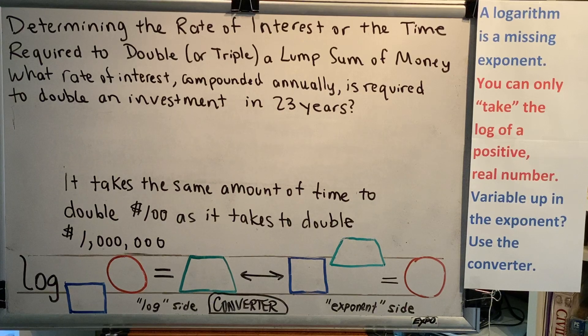What rate of interest, compounded annually, is required to double an investment in 23 years?